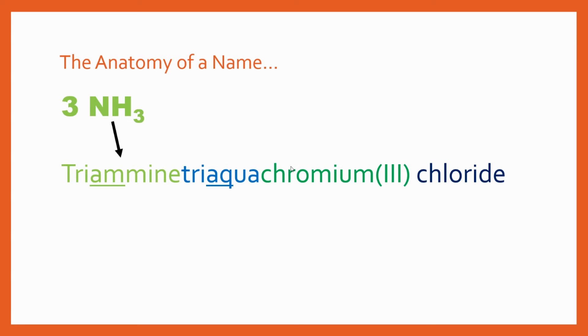So let's look at this name and break it down. The triamine means that we've got three NH3s. The triaqua means we've got three H2Os. The chromium with the three is the metal in the oxidation state and then the chlorine is sometimes called the counter ion.